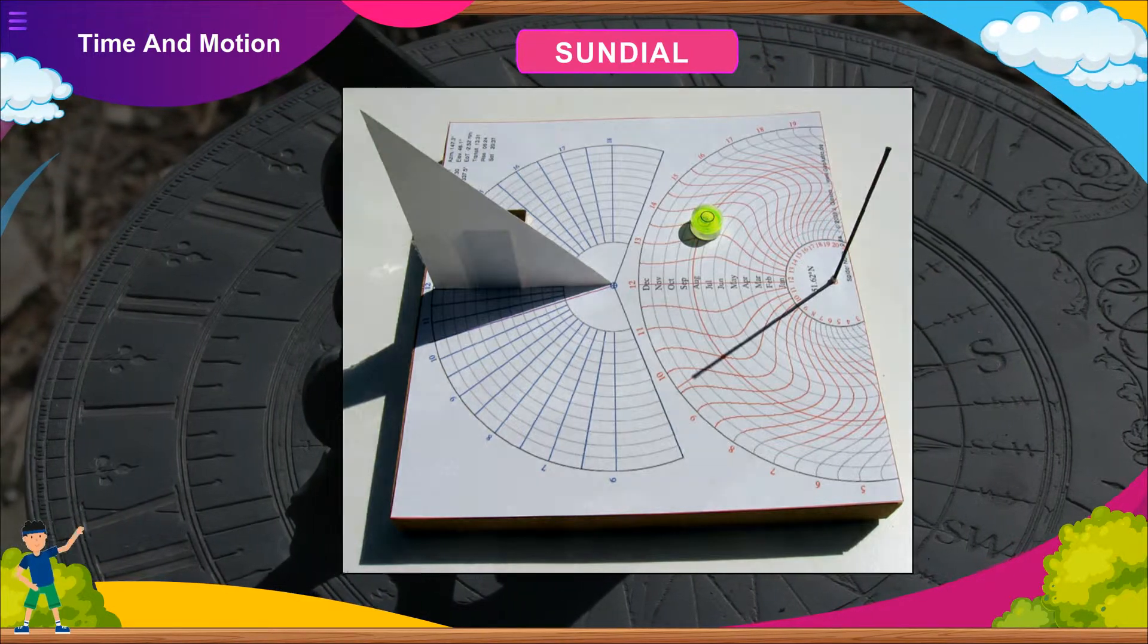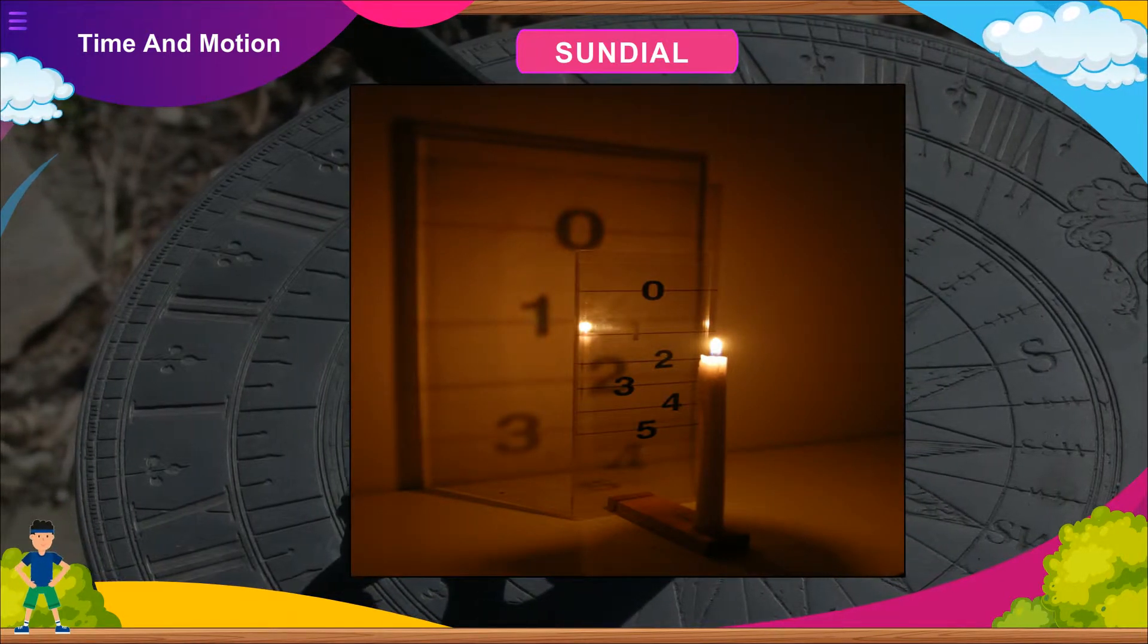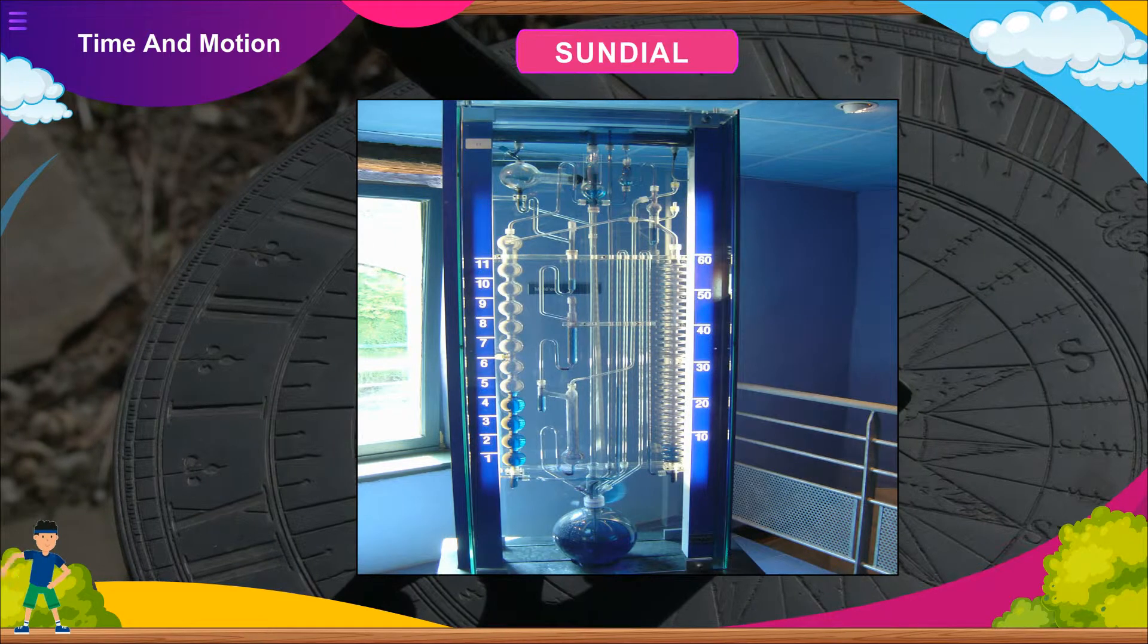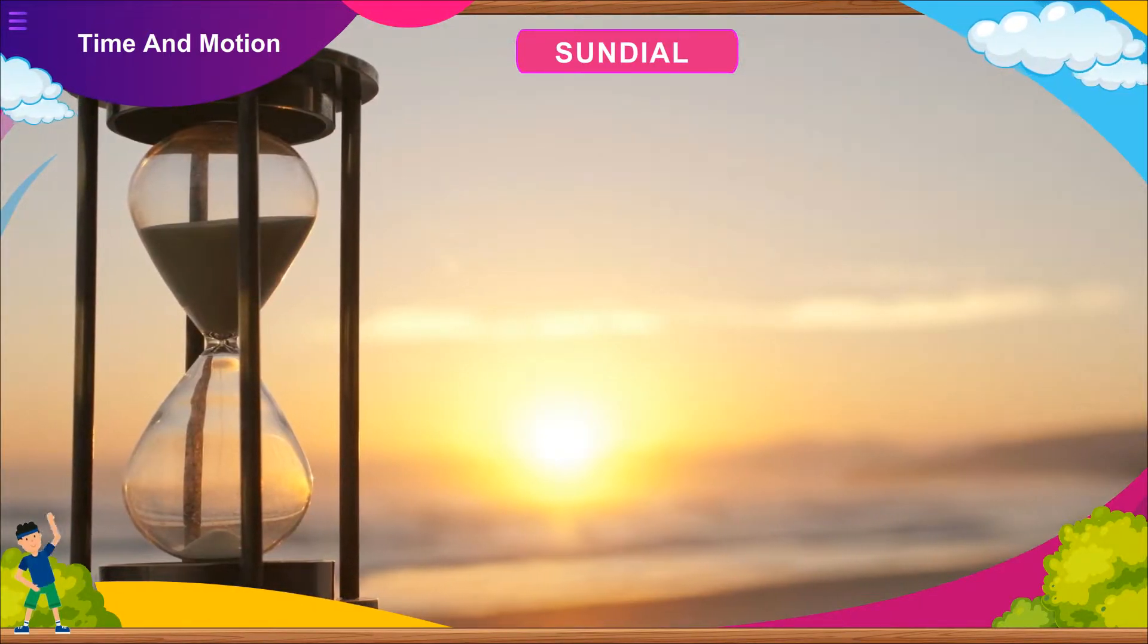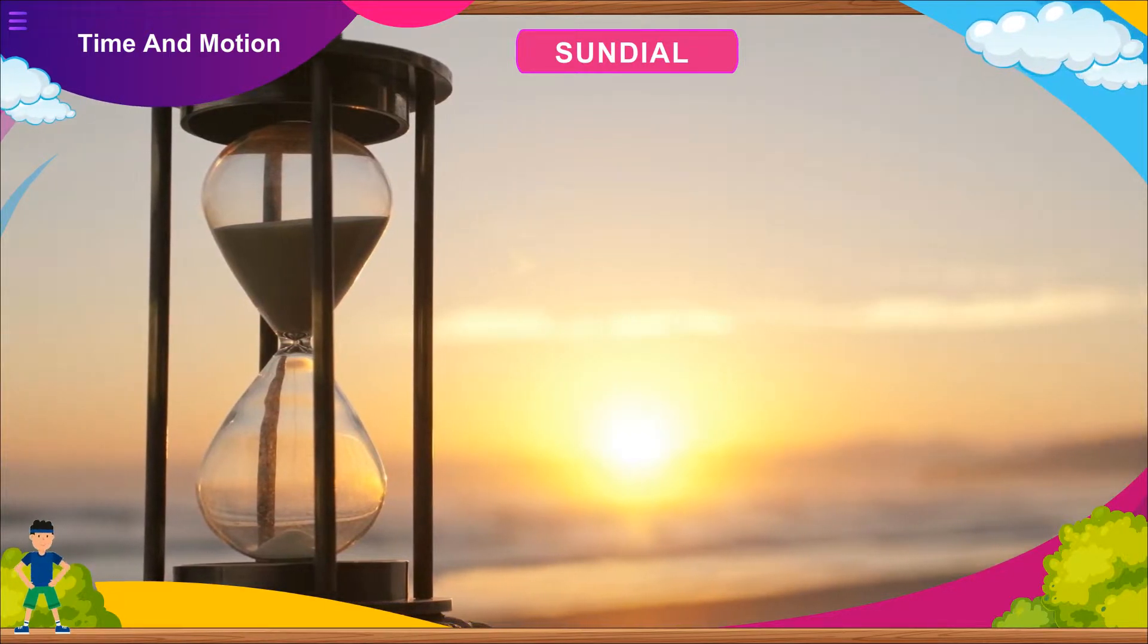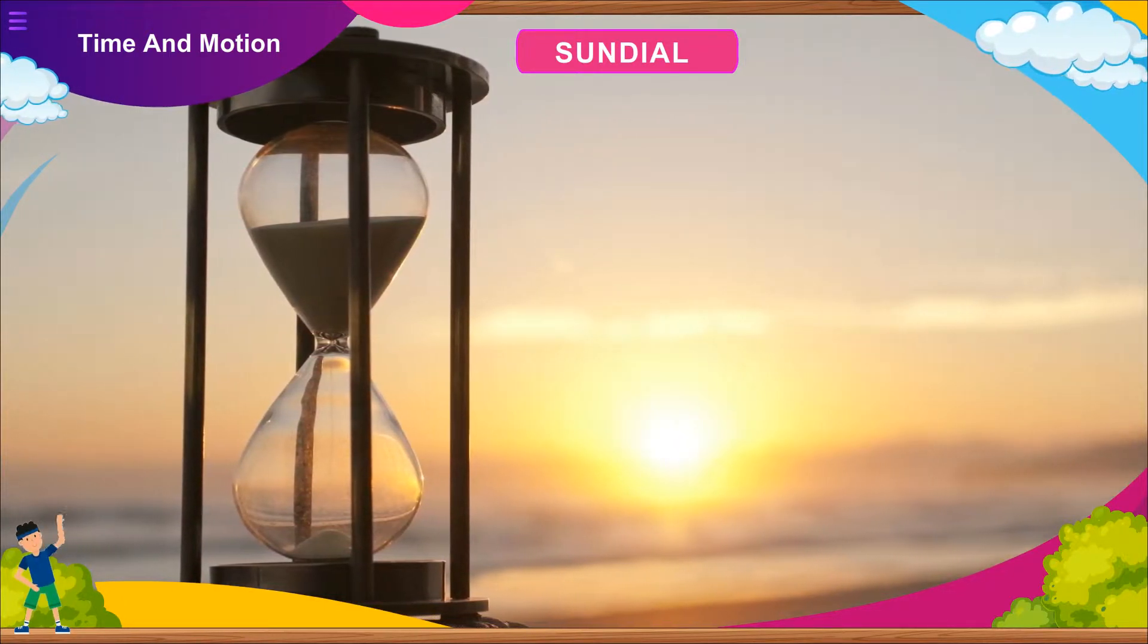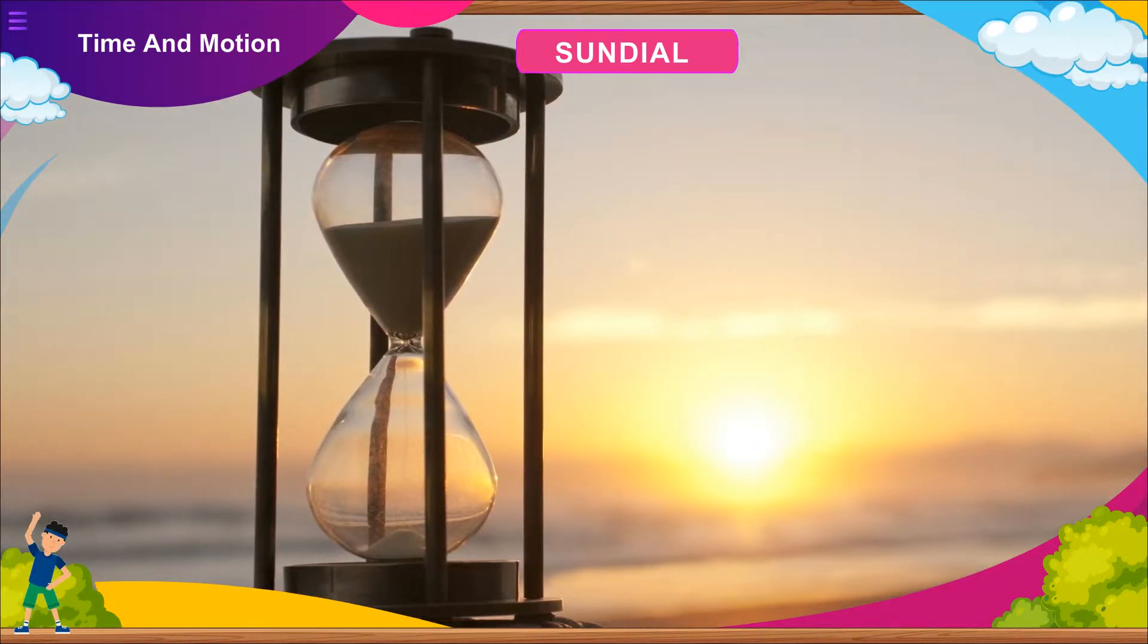Apart from the sundial, there are other primitive instruments of measuring time as well, like the candle clock, hourglass, and water clock. The hourglass consisted of two rounded glass bulbs connected by a narrow neck of glass. The top bulb was filled with sand and a measured amount of sand particles streamed down from the top bulb into the bottom bulb, giving the time.